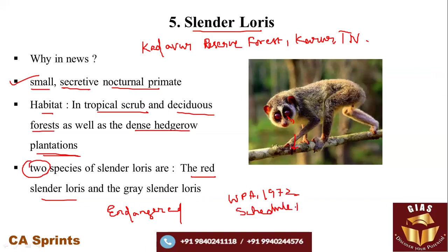Under CITES, they are listed in Appendix II. In Kadavur Reserve Forest in Karur District, there are hills and dense dry forests. Animals found here include bison, spotted deer, mouse deer, slender loris, jackals, and wild boar. That is why the slender loris sanctuary is located in this forest.